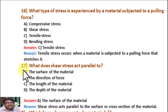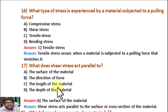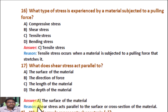Question number 17. What does shear stress act parallel to? Option A: The surface of the material. Option B: The direction of force. Option C: The length of the material. Option D: The depth of the material. Correct answer is A: The surface of the material. Reason: Shear stress acts parallel to the surface or cross-section of the material.